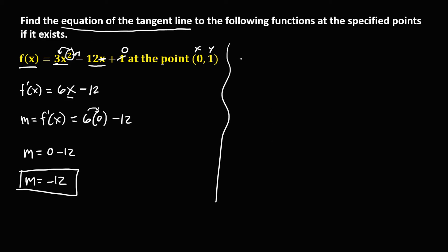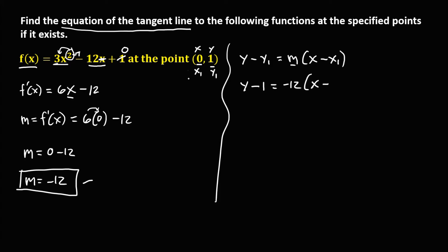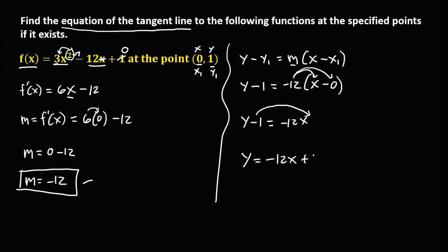To find the equation of the tangent line, using the slope formula y minus y₁ equals m times (x minus x₁). From the given point, x₁ is 0 and y₁ is 1. So y minus 1 equals negative 12 times (x minus 0), which gives negative 12x. Transposing the negative 1, y equals negative 12x plus 1. This is the equation of the tangent line.